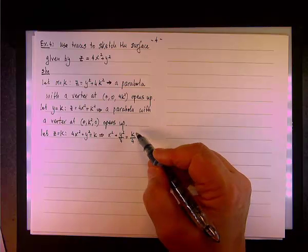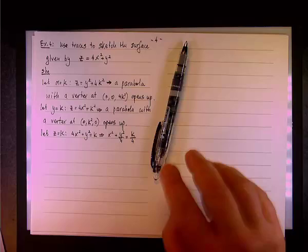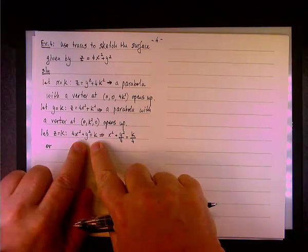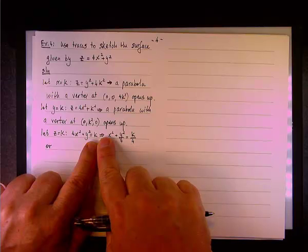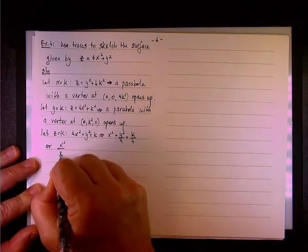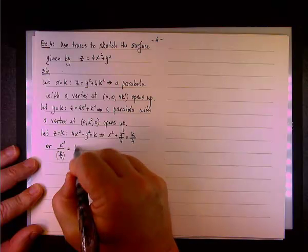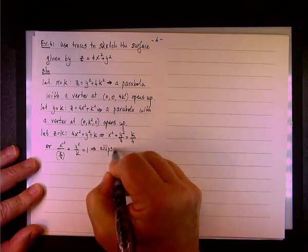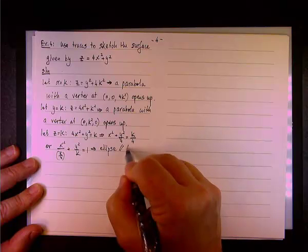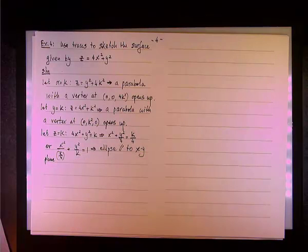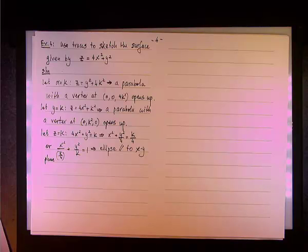And what is this thing? It's an ellipse. You can make this equals 1. Actually, let me modify it. Instead of dividing by 4, I'll divide by k. So I have x squared divided by k over 4, y squared over k equals 1, which is ellipse, or a family of ellipses, parallel to what plane? To the xy plane.